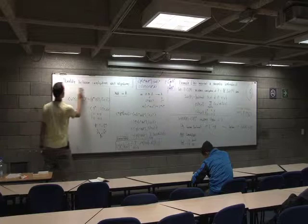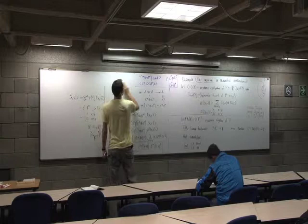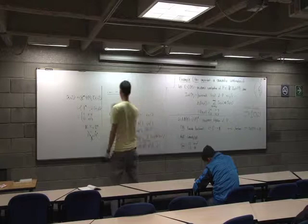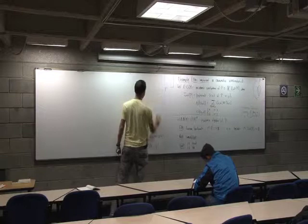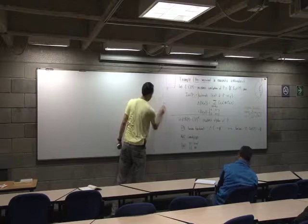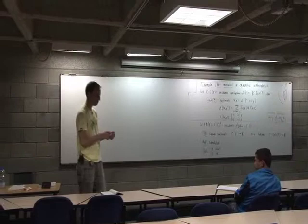We've finished duality between co-algebras and algebras for now. The next thing I want to show you is a very strange notation for working with co-algebras — at least it's strange when you first see it. But hopefully after using it a while, you'll be convinced it's useful.